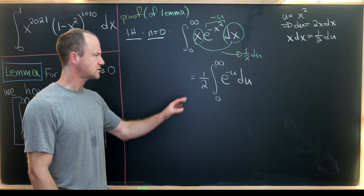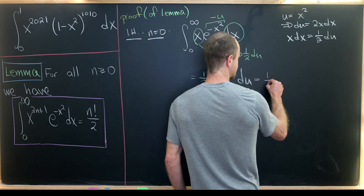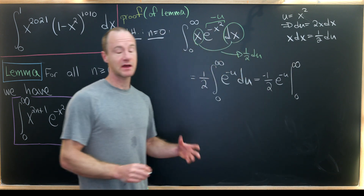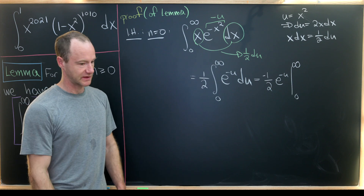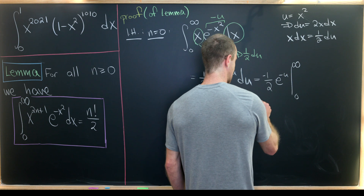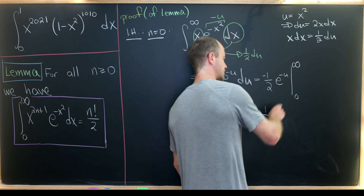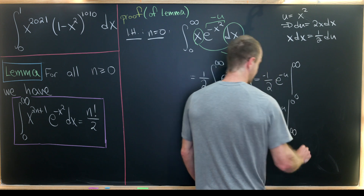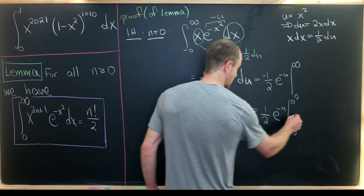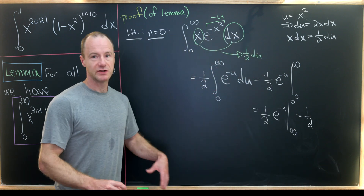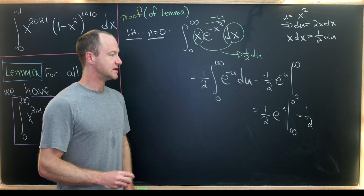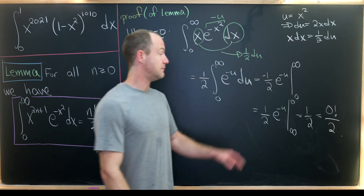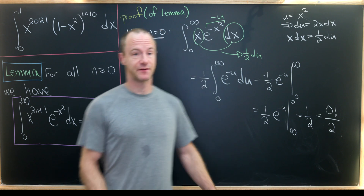Now we take the antiderivative, leaving us with negative one half e to the minus u evaluated from zero to infinity. We use the minus sign to swap the bounds of evaluation, giving us e to the minus u evaluated from infinity to zero. Plugging in zero gives one half, and the limit as u approaches infinity gives zero. So our answer is one half, which equals zero factorial over two, confirming the formula for the base case.